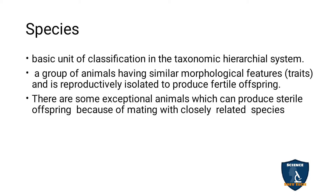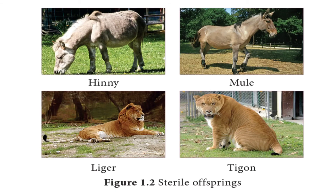There are some exceptional animals that produce sterile offspring by mating with closely related species. When closely related species are crossed, they produce sterile offspring — meaning they cannot produce young ones. The four examples of such sterile offspring are: Hinny, Mule, Liger, and Tigon.